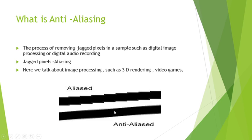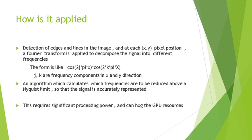A line can have infinite resolution, but the human eye and our computers do not. So we have to compromise. These jagged pixels are not desirable. In terms of signal processing, this is comparable to the removal of high frequencies in a signal — anti-aliasing acts like a low-pass filter to remove high frequencies.